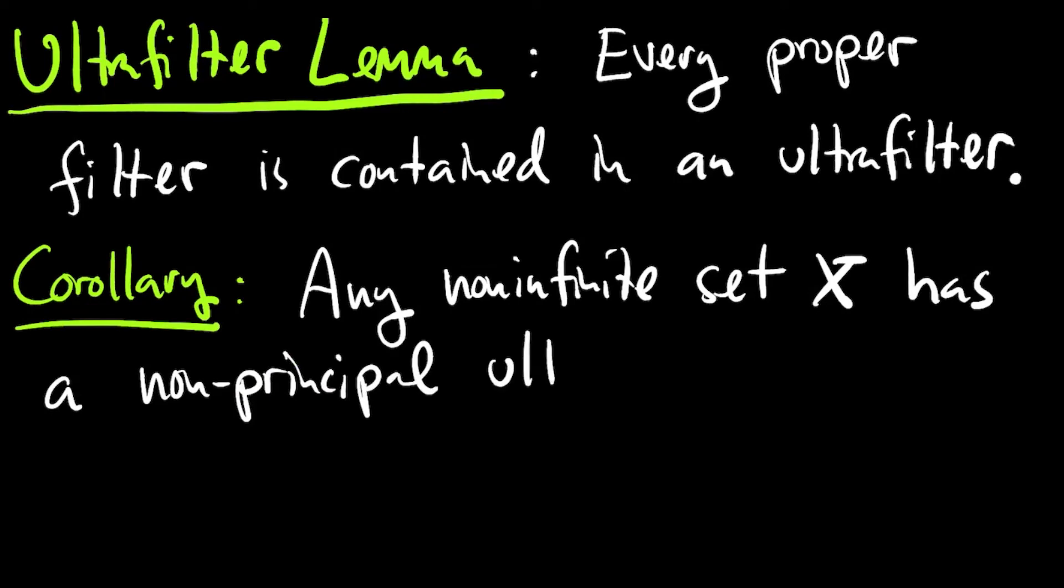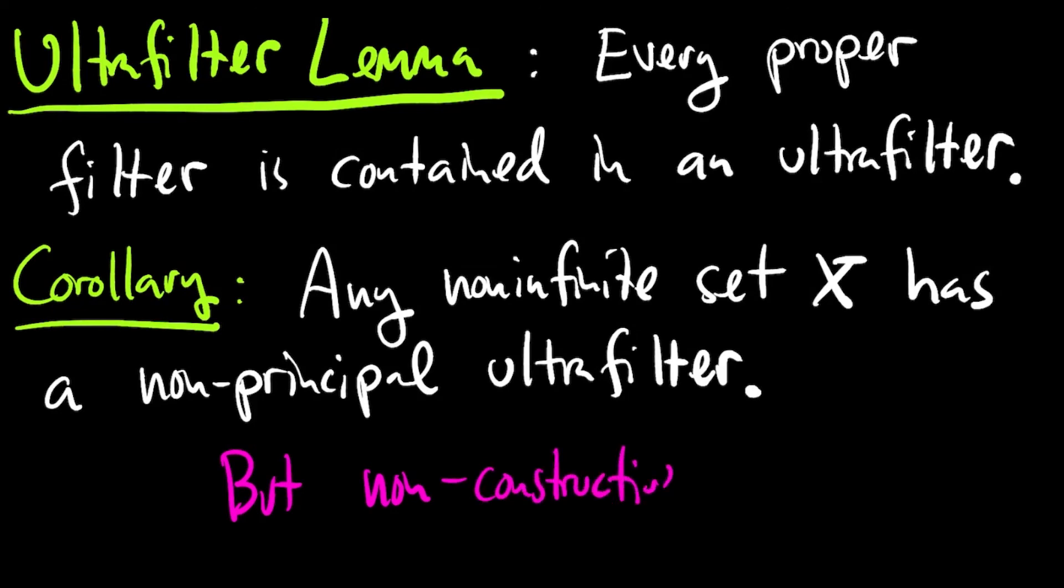Now, by a cardinality argument, which I won't go into here, you can see that there are actually many, many ultra filters, non-principle ultra filters on an infinite set X. And the cardinality of them is much greater than the cardinality of subsets of X. However, the proof that they exist is non-constructive, and so even imagining one non-principle ultra filter on an infinite set is as hard as imagining a well-ordering on the real numbers.